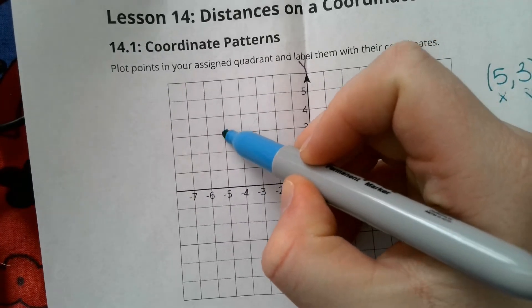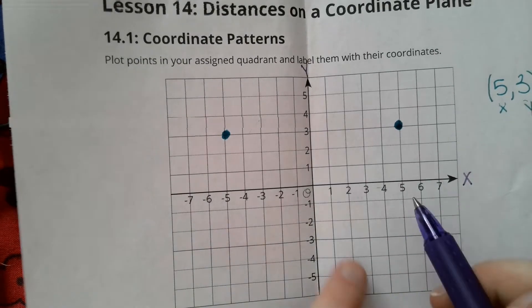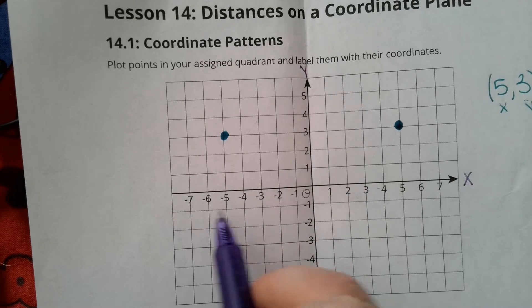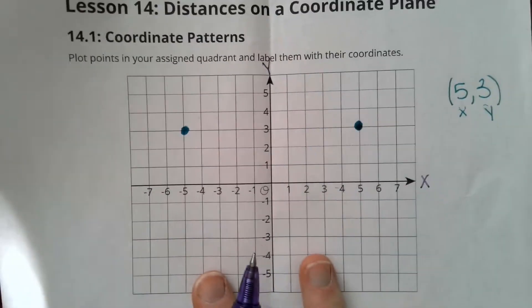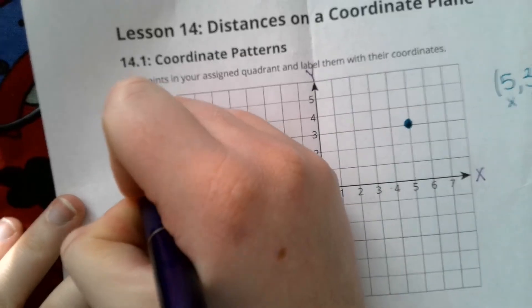Okay, so perfect. Looking at how it has changed our x-coordinate. We went from 5 to negative 5. Those are opposites. So when I reflect 5, 3 across, I get negative 5, 3.